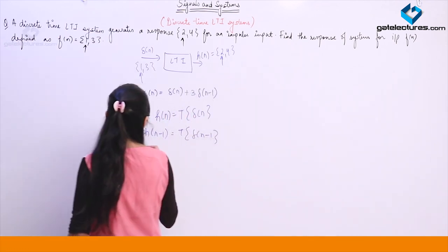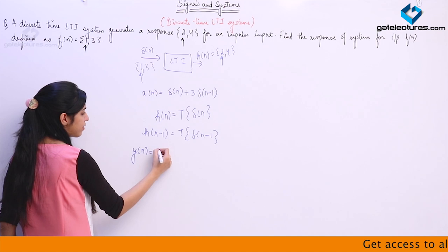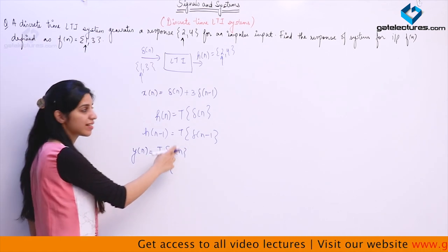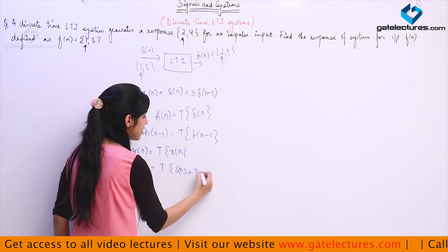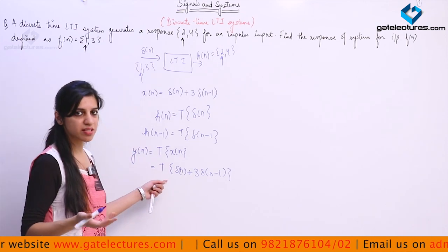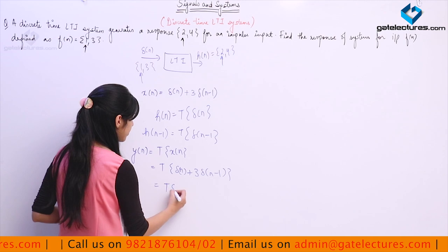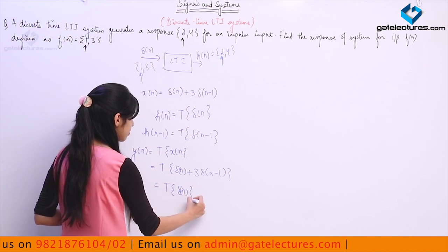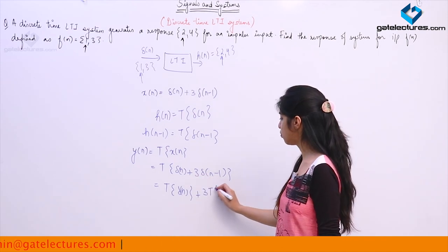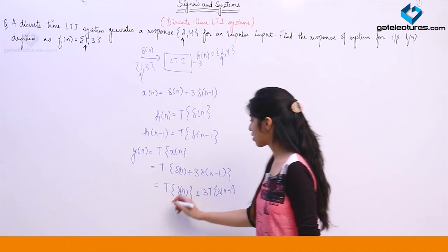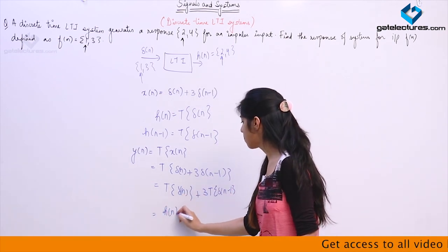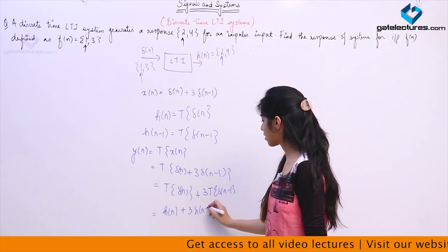Now if I try to find output y[n] = T{x[n]}, I write x[n] as δ[n] + 3·δ[n-1]. Since the system is linear, I can write this as: response to δ[n] plus 3 times response to δ[n-1], taking 3 outside as a constant. Response to δ[n] we know is h[n]. So this is going to be h[n] + 3·h[n-1].